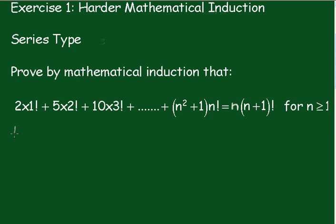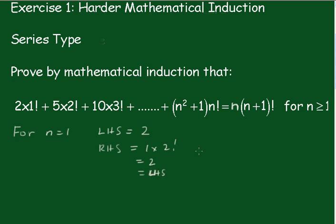For n equals 1, the left hand side is obviously just 2 times 1, which is 2. The right hand side equals 1 times 2 factorial, which obviously equals 2, which equals the left hand side. Therefore, the statement is true for n equals 1.